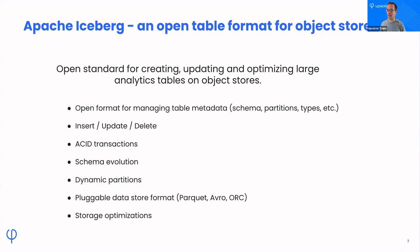A key feature of Iceberg is its open format for managing metadata. Iceberg extracts metadata from a catalog and moves that logic into files. This means you have less dependence on a catalog to maintain schemas and partitions — you can handle that inside the table format itself. It's much more portable if you want to move it from cloud to on-prem, on-prem to cloud, or to different cloud providers.